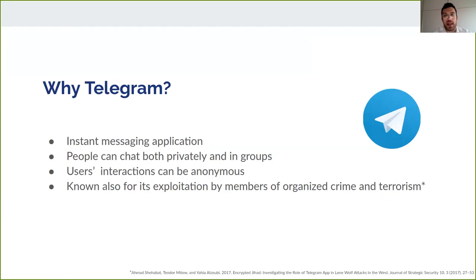We chose to exploit Telegram, which is an instant messaging application where people can chat both in private and in public groups. It's an interesting OSN that has not been analyzed so much in literature and has very peculiar features like the fact that users can join without disclosing their real-life information, making it different from OSNs like Facebook. It is also known for being exploited by members of organized crime and terrorism.